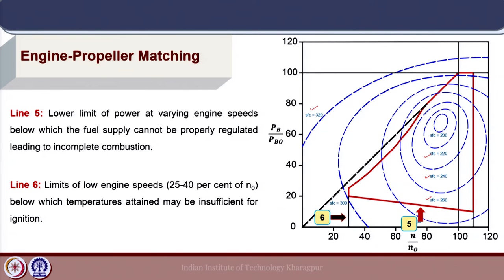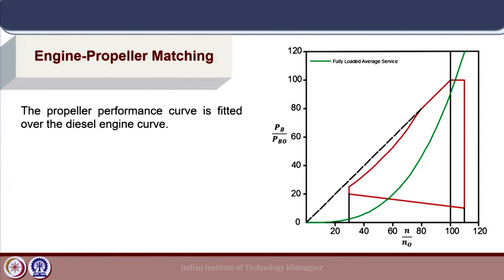The SFC — specific fuel consumption — values shown in the engine envelope chart depend on the location on the engine envelope where we are computing the power characteristics. For the propeller power curve, the fully loaded average service condition is taken and that propeller curve is juxtaposed on the engine performance curve. The reason for choosing this condition will be discussed later when we talk about the margins. This allows us to understand the relation between propeller power demand and power generated by the engine in engine propeller matching.